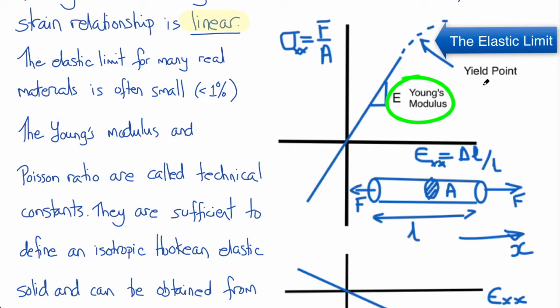And in the case of a ductile material, the elastic limit would be the yield point at which the material becomes plastic and starts to deform irreversibly, such that when we unload it, it doesn't return to its original length.